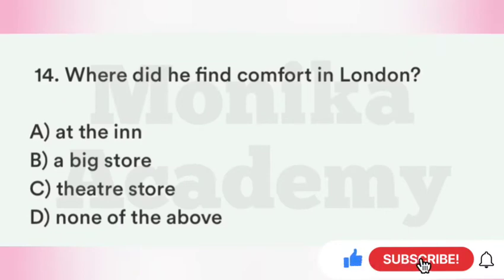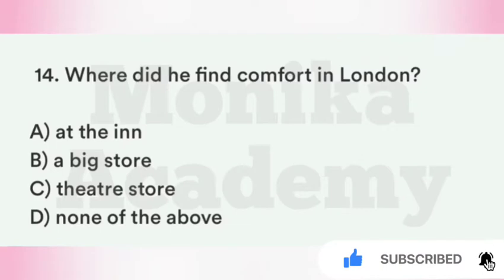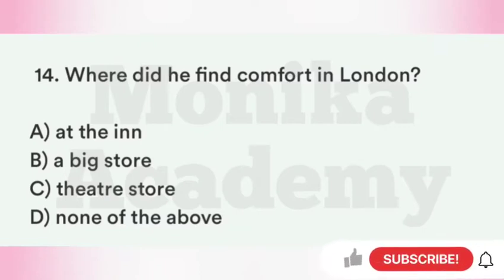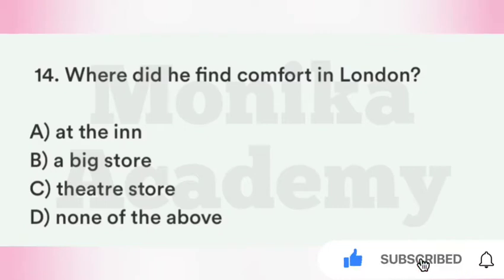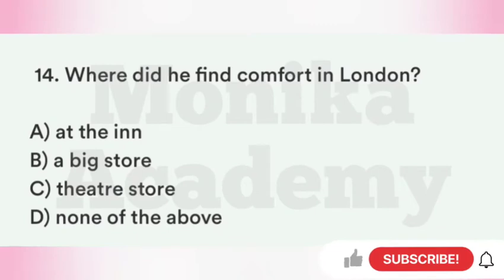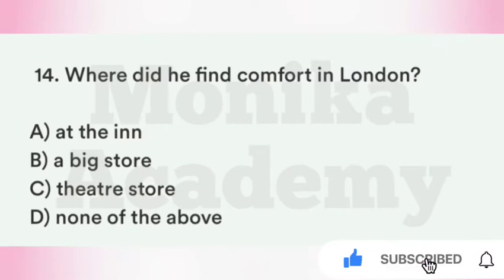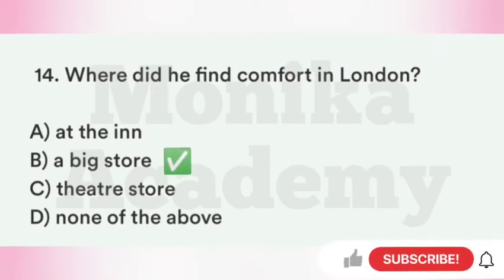Question 14: Where did he find comfort in London? Griffin ने London में कहाँ अपने लिए आराम की जगह ढूंढी? The correct answer is Option B, a big store — London में Griffin ने एक बड़े store में अपनी ज़रूरत का सामान पाया.